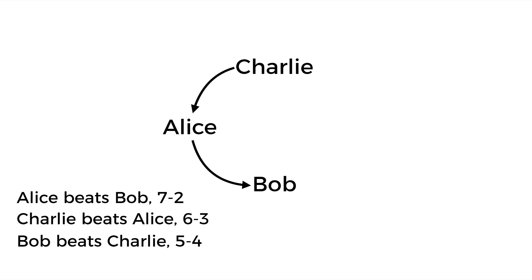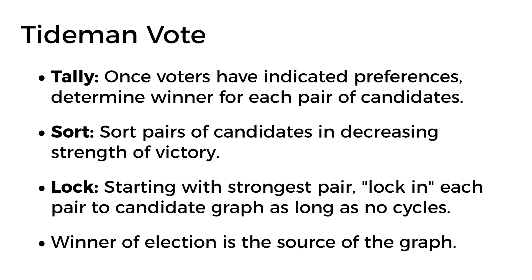We look at the resulting graph to determine the winner of the election. In this case, the winner is again the source of the graph, which is Charlie. In summary, the Tideman voting method works as follows.